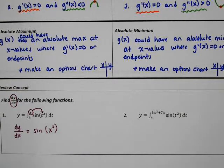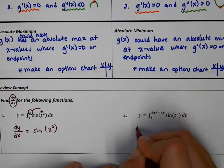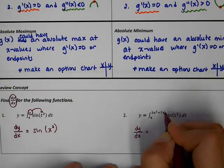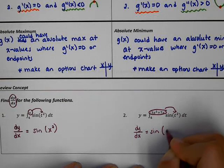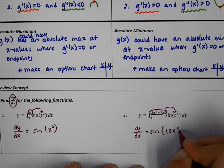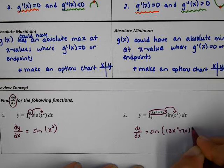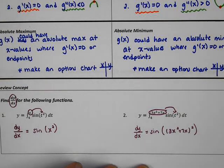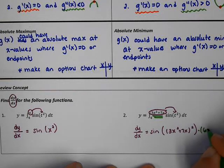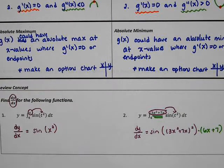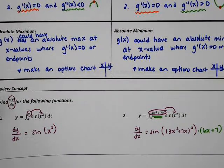The only time it gets more complicated is when you need the chain rule. You would still drop in the bounds, but then you multiply by the derivative of what you dropped in — for example, times 6x plus 7. Once we combine these two ideas, we're going to be able to work with what are called accumulation functions.